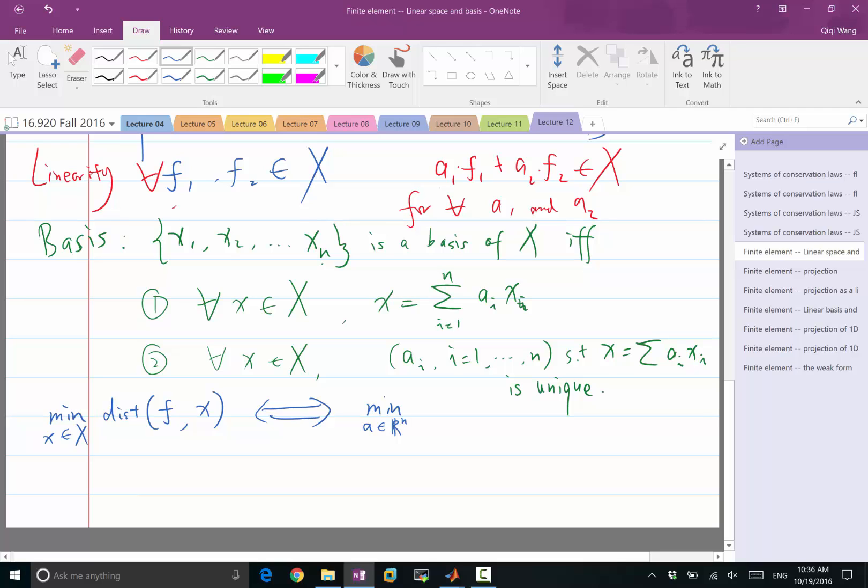I can minimize over all the possible a's that is in Rn. So if the basis has n entries, the distance between f and that linear combination of xi.